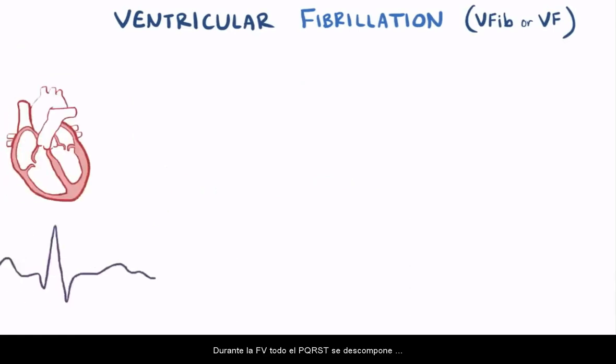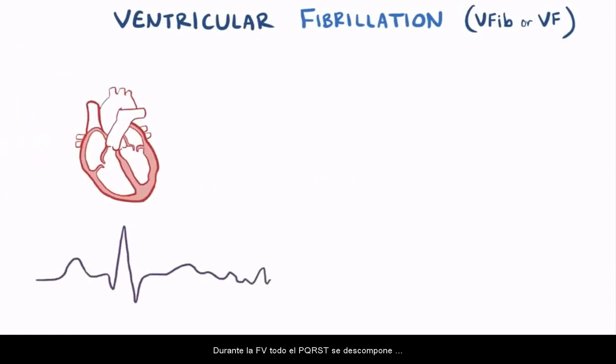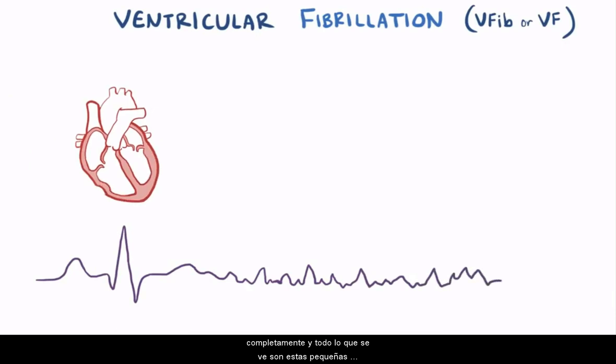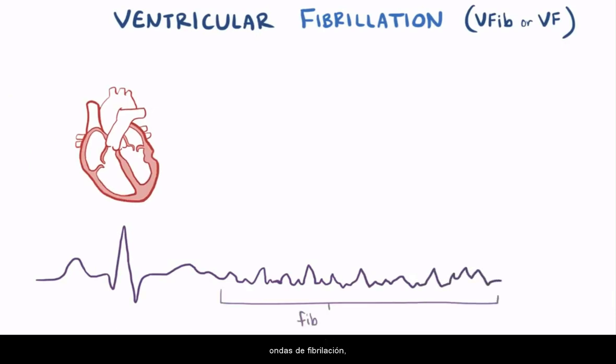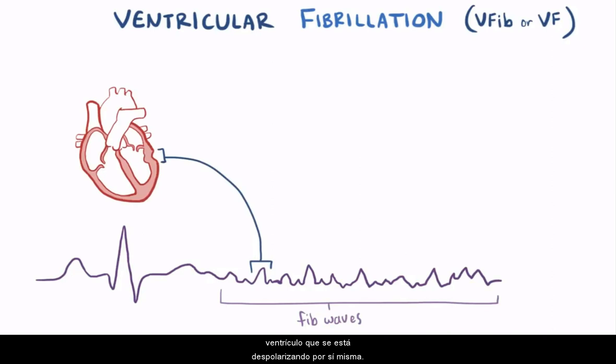During VF, the whole PQRST breaks down completely, and all you see are these small fib waves, each one corresponding to an area of the ventricle depolarizing on its own.